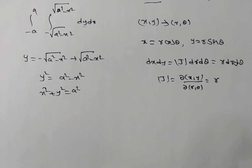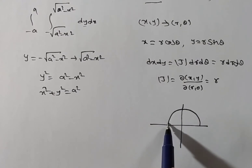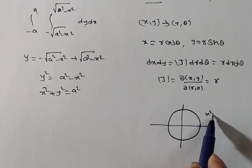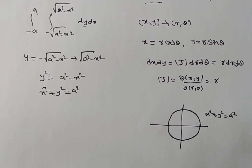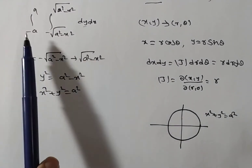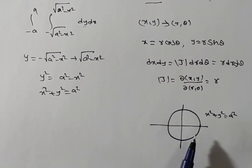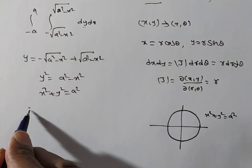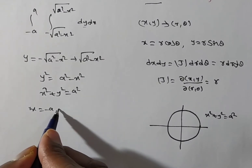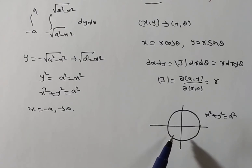This is a circle. The region is a circle with radius a. I am giving a rough sketch. This is x squared plus y squared equals a squared — a full circle, because x goes from minus a to a, and y goes from negative to positive, meaning we take the total circle.